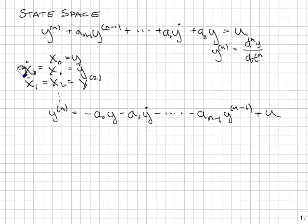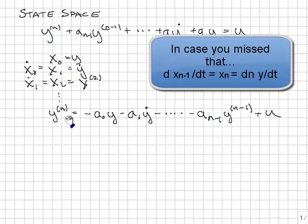So we have this relationship between the states all the way down until we get to x n minus 1 dot, which is the same as xn, which is the same as yn, and we need a relationship for that.